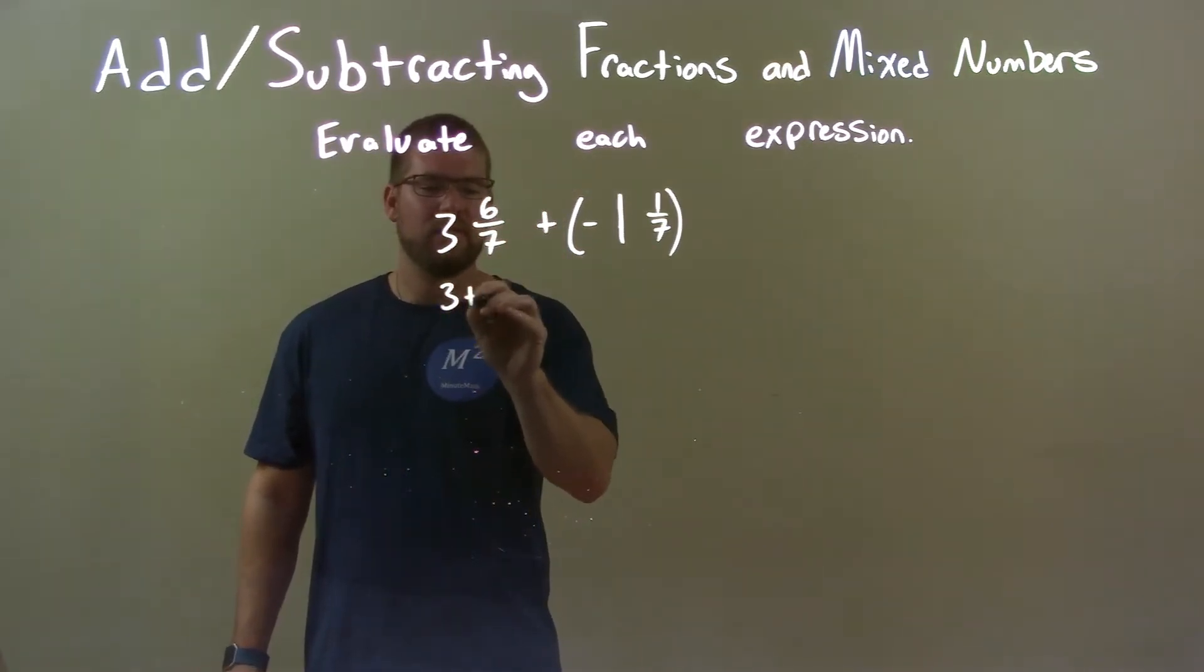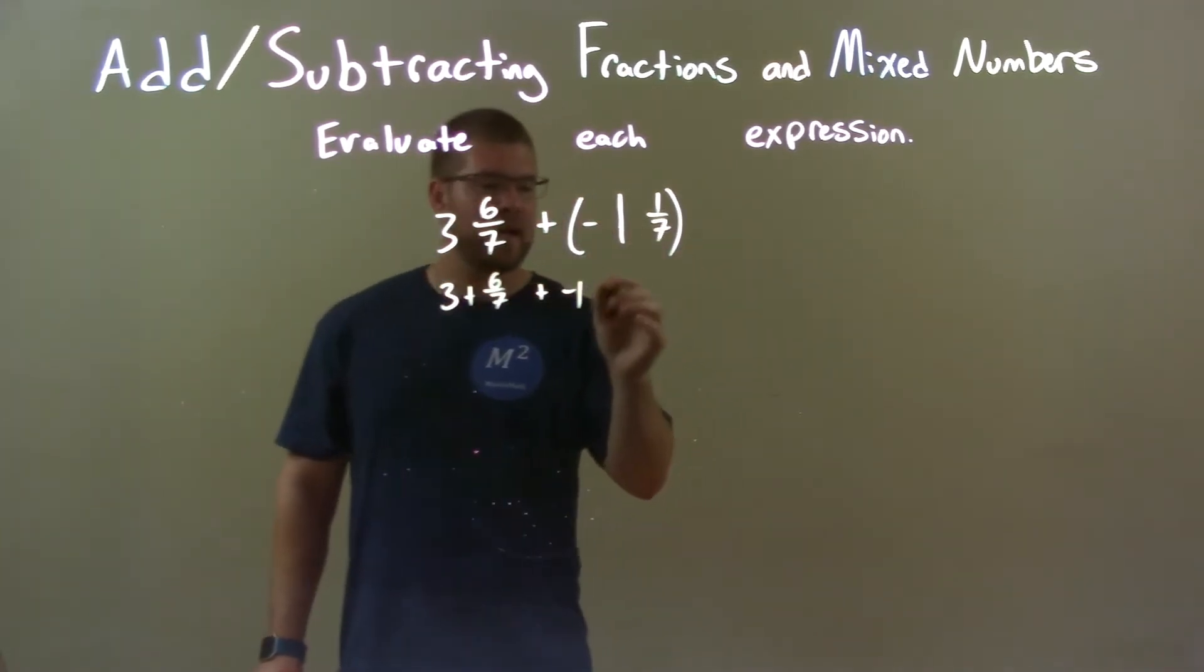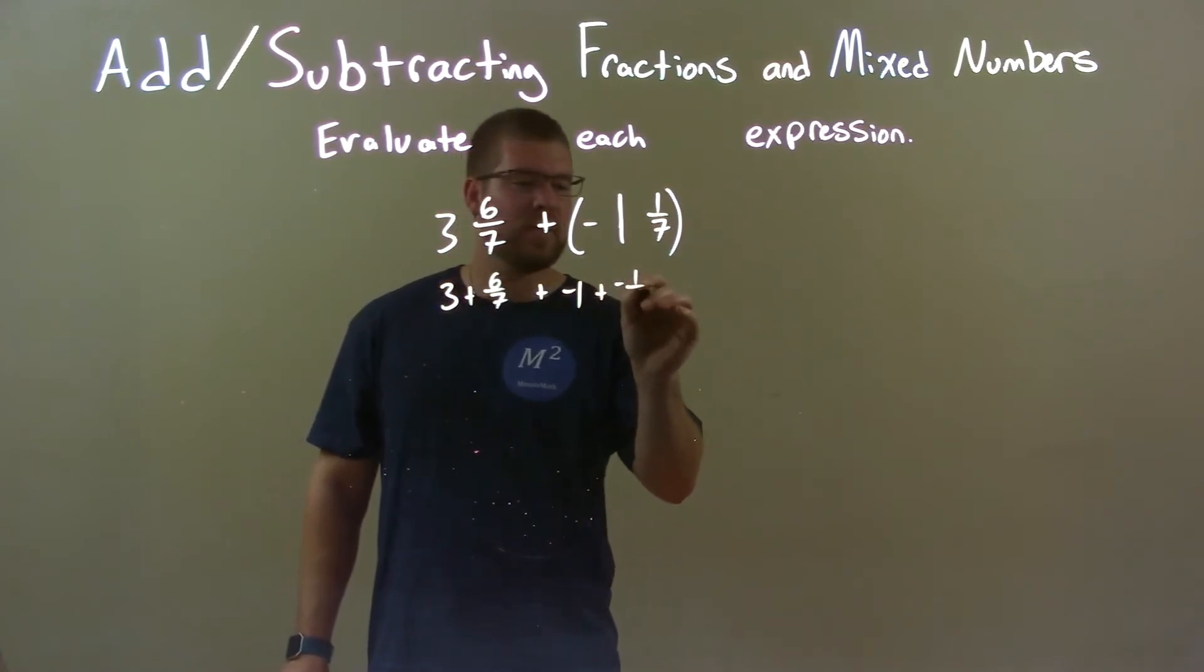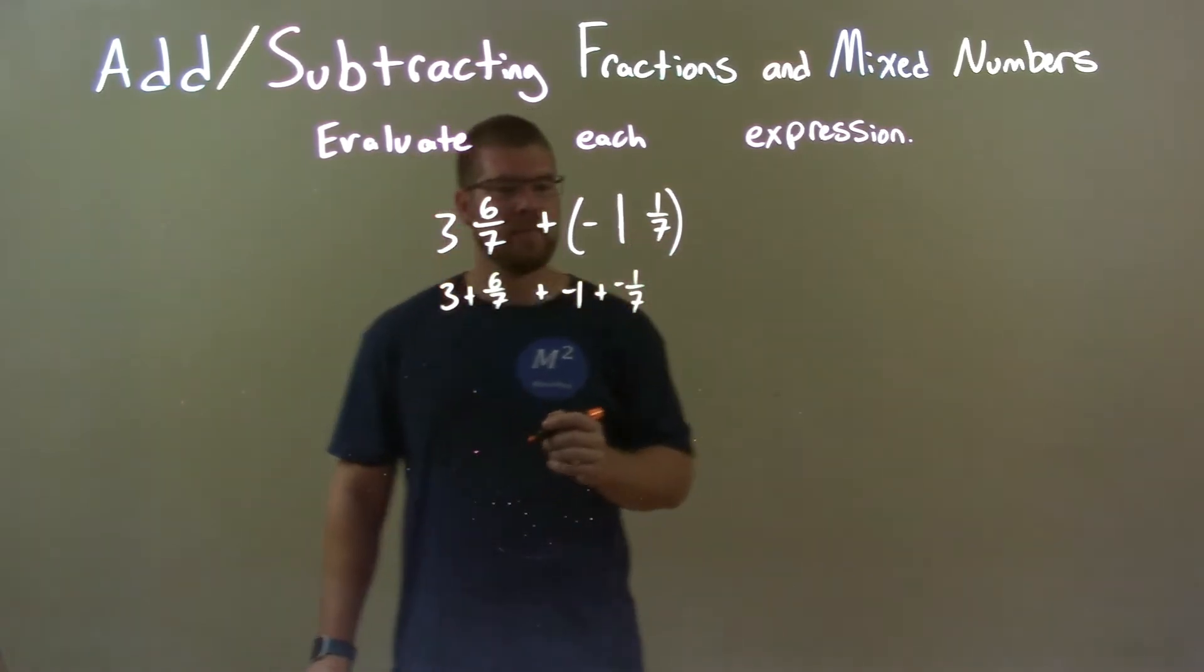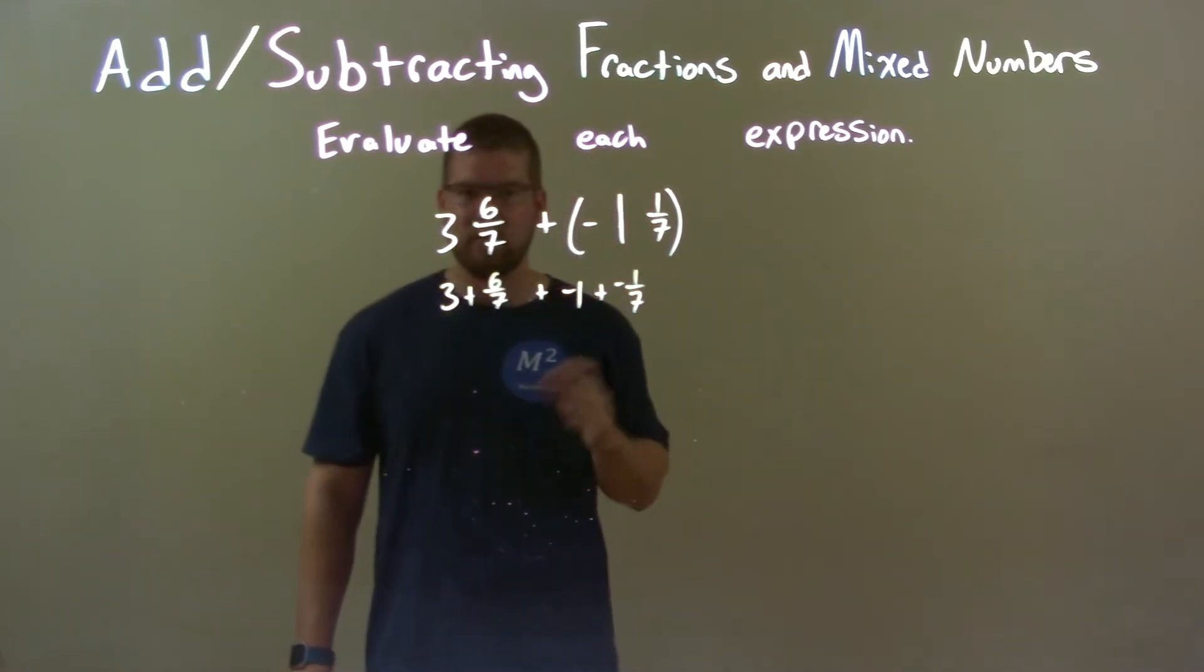3 and 6/7 is the same thing as 3 plus 6/7. And then we have plus negative 1. But make sure that negative plus negative 1/7 goes to that fraction. Negative 1 and 1/7 is the same thing as negative 1 plus negative 1/7.